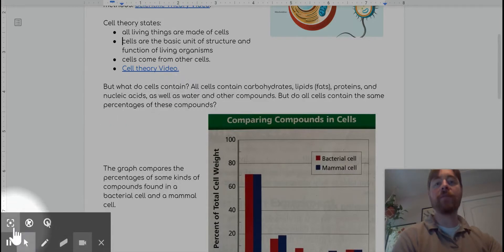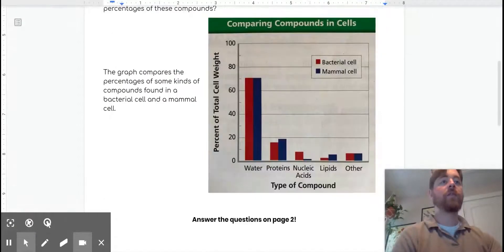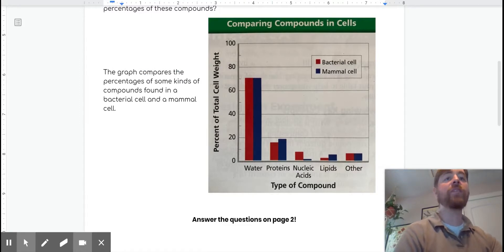And here we get to our graph. Our graph compares the percentages of some kinds of compounds found in a bacterial cell and a mammal cell. So if you look at our key, the red bars are our bacterial cells and the blue bars are for our mammal cells. The percentage of total cell weight that it is made up of by water, by proteins, nucleic acids, lipids, or other molecules that you find in cells.